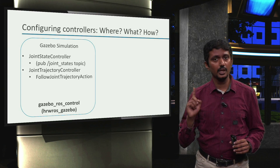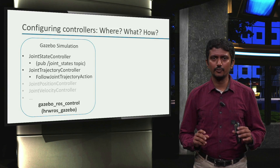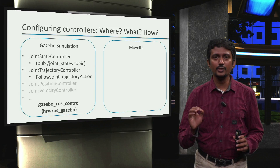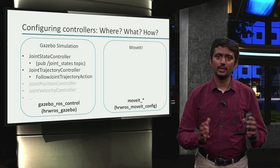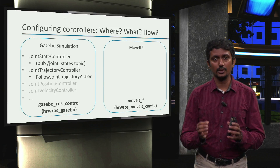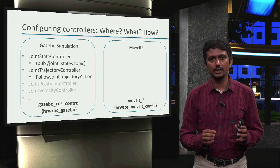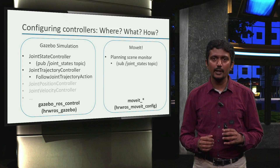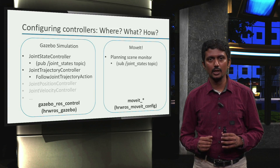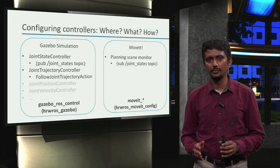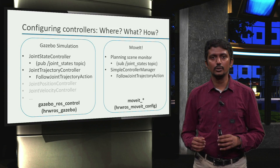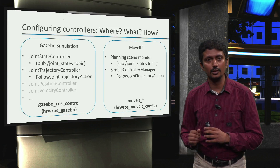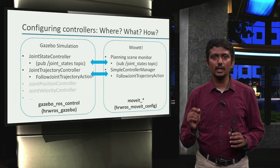Recall again, we studied action servers and action clients in week 1. Other types of controllers can also be configured for a Gazebo simulation, but they are not necessary in this course. Now let's go on to the MoveIt side of things. All the MoveIt magic that we have spoken of in the earlier videos happens in the MoveIt packages that also comes with the course installation. In the previous video, we created the hrw-ros-moveit-config package to enable our ROS application to use MoveIt. MoveIt has a module called the Planning Scene Monitor that uses the information in the joint states topic to update the positions of things it knows about, such as our robot arms and other objects in the world. And MoveIt also has a Simple Controller Manager module that allows us to configure a follow joint trajectory action client for the follow joint trajectory controller. So the plumbing between MoveIt and our Gazebo simulation is clear now.